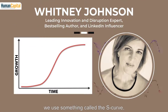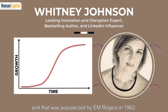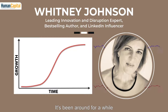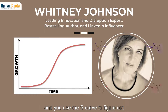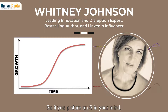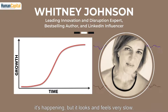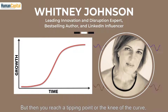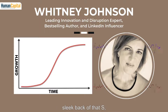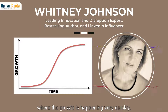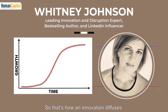As we were investing, we used something called the S-curve, popularized by EM Rogers in 1962. You use the S-curve to figure out how quickly an innovation will be adopted. If you picture an S in your mind, at the base the growth is happening but looks and feels very slow. Then you reach a tipping point — the knee of the curve — and move up that steep back of the S where growth happens very quickly. Then you reach saturation where growth starts to taper off.